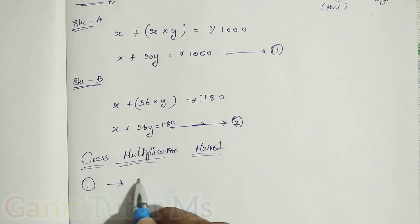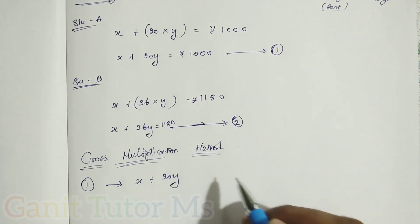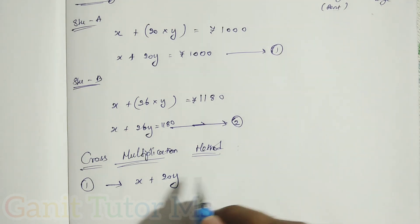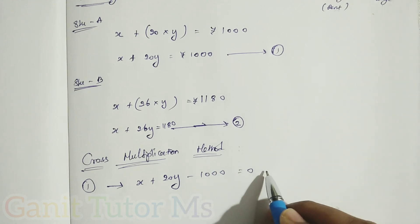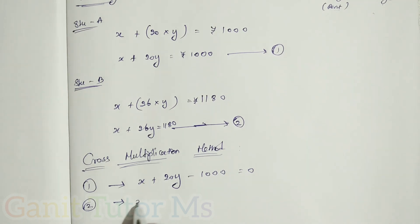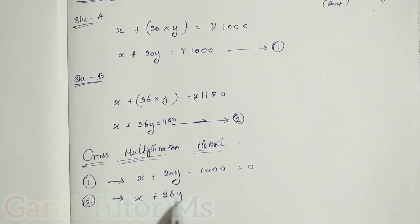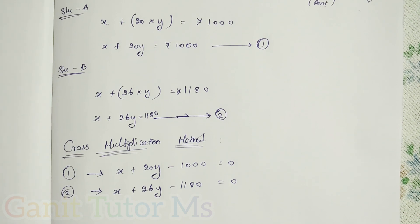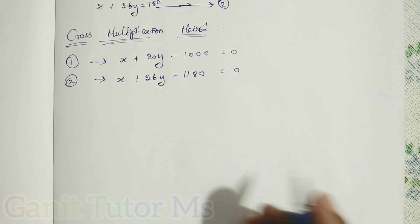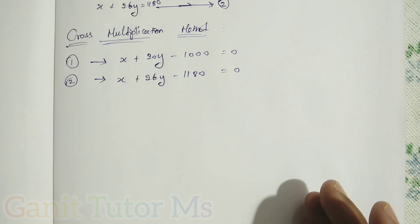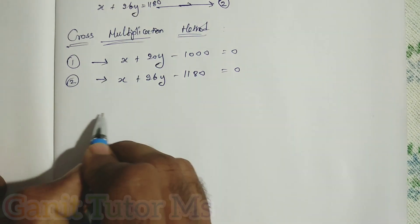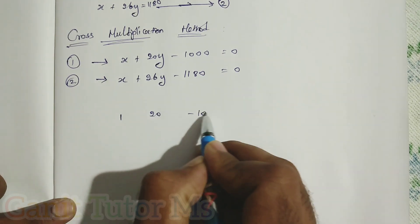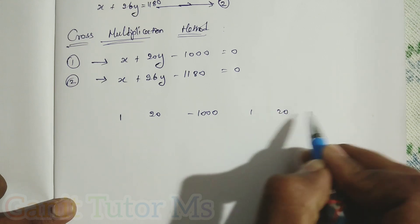From equation number 1: x plus 20y minus 1000 equals 0. From equation number 2: x plus 26y minus 1180 equals 0. Now for the first step of the cross multiplication method, we write the coefficients and constants. For equation 1: a1 = 1, b1 = 20, c1 = minus 1000. Repeat the same: 1, 20, minus 1000. For equation 2: a2 = 1, b2 = 26, c2 = minus 1180. Repeat: 1, 26, minus 1180.